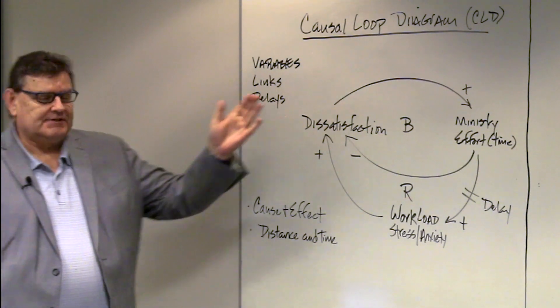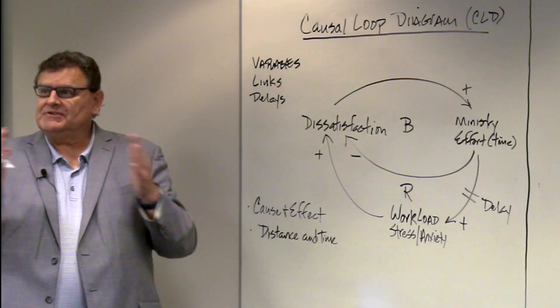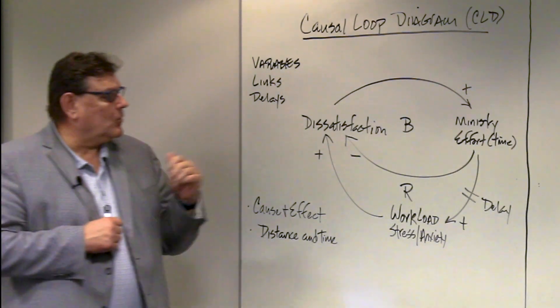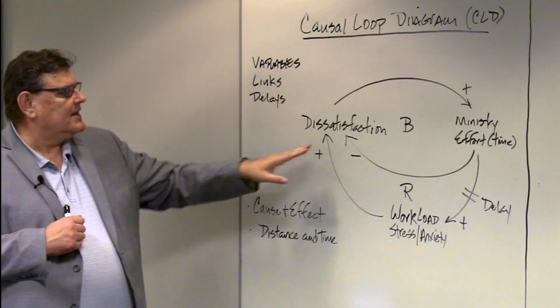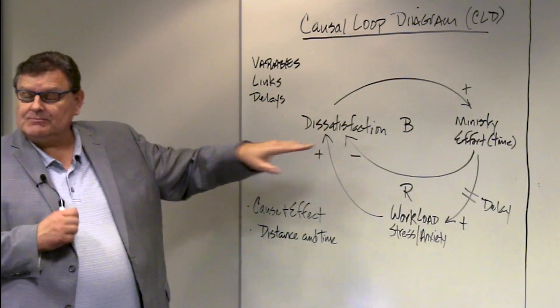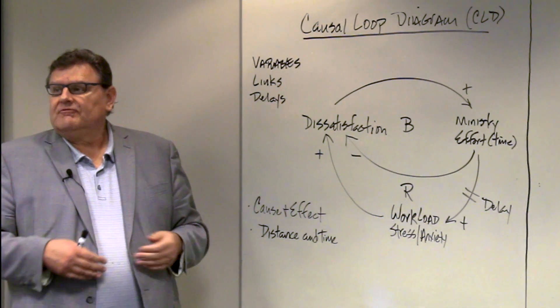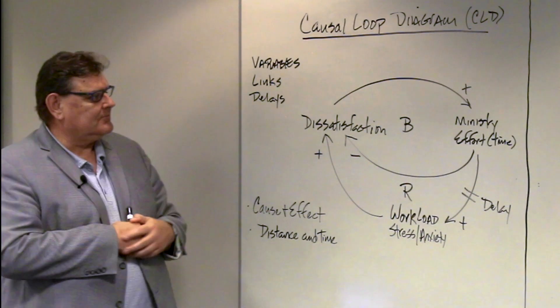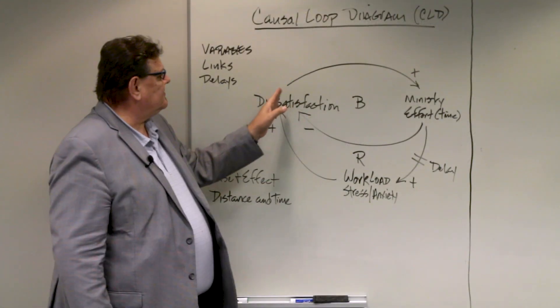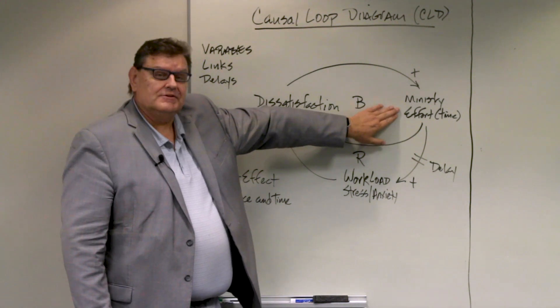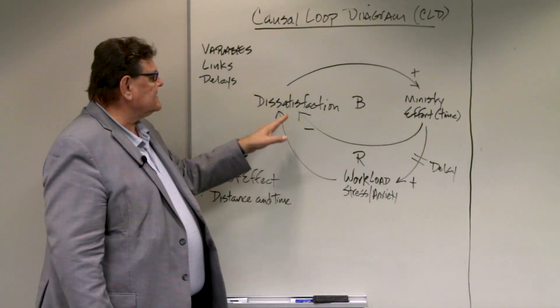It's called a causal loop because it is a loop that is representing causal relationships. If you'll recall, we worked with three variables: the people's dissatisfaction as Moses was doing his ministry, and their dissatisfaction was primarily that they had to wait all day for him to do his adjudication ministry, and the relationship of that dissatisfaction that it had on his ministry effort or his ministry time. And that was a positive relationship.